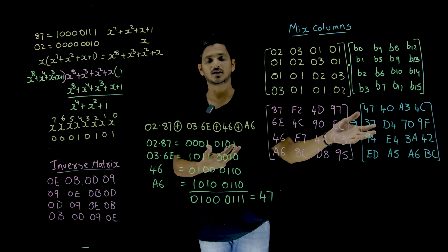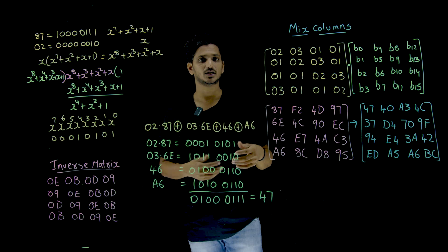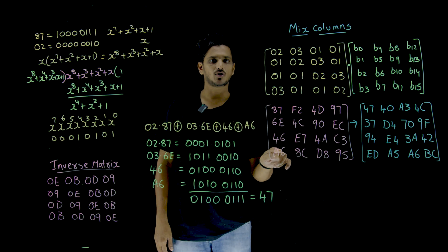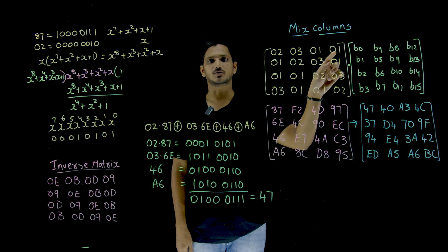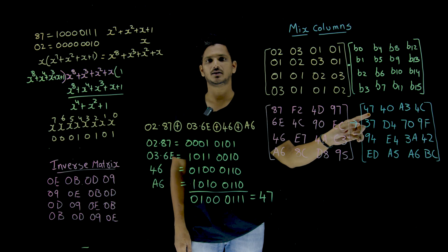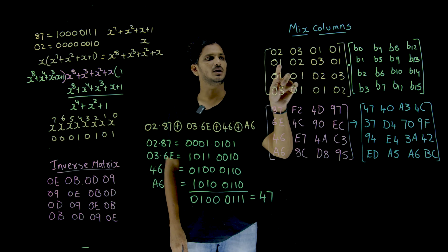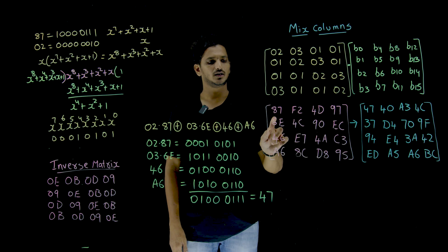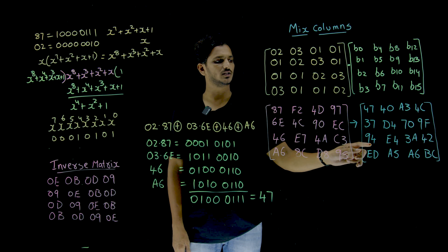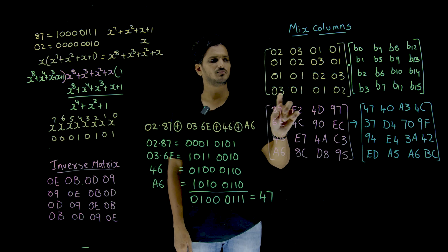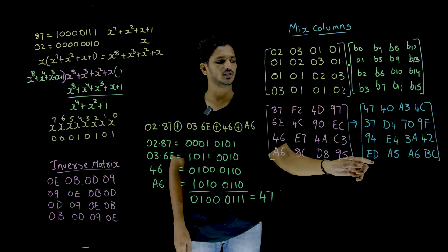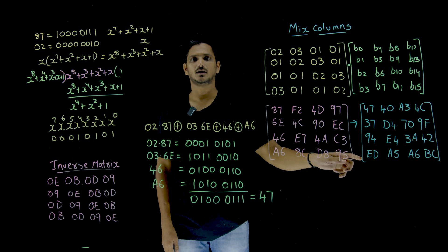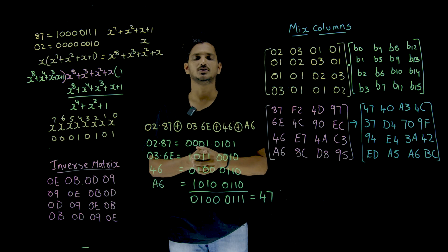Let us take the first column and you are going to get the first element. Take the first column, multiply by this and you get the second element. Take the first column multiply by this, you're going to get the third element. First column, fourth row, you're going to get the last element. This is how matrix multiplication is done.